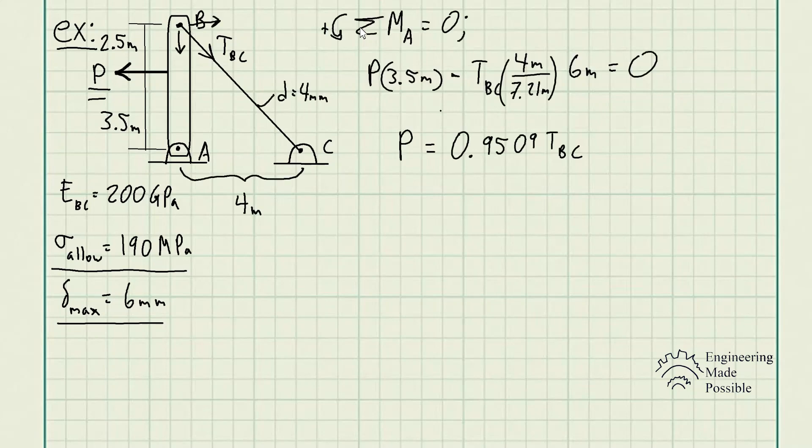I'll go ahead and just put the results here for that. After this, we're able to derive this relationship. This force is equal to 0.9509 times the tension in that cable BC here. Now, first off, we're going to go ahead and apply this criteria, the maximum allowable stress.